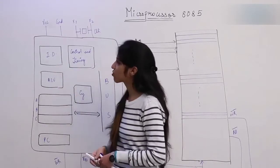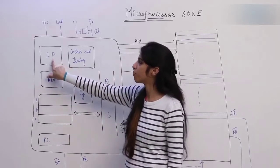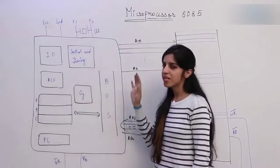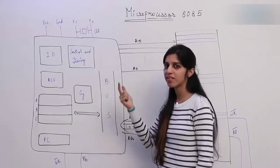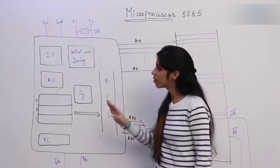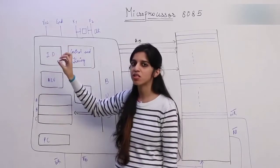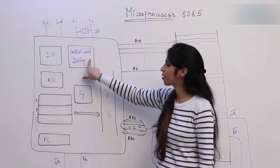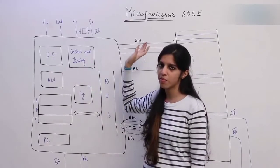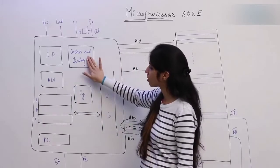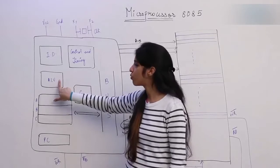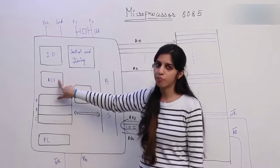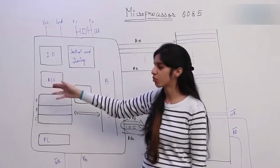This is the ID — Instruction Decoder. Any instruction that you give to the microprocessor, there should be something inside it that decodes it, executes it, and understands it. The work of this block is to see what instruction is given and tell the microprocessor what work is to be done. This is the Control and Timing Unit — it synchronizes things: when you are going to access memory, when input/output has to be accessed. This is the main part: the ALU, the Arithmetic Logical Unit, which performs all arithmetic and logical operations using adders, subtractors, and gates.